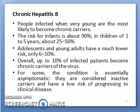Most individuals suffering from acute hepatitis B clear the virus successfully, but some fail to do so and develop chronic hepatitis B. People infected when very young are most likely to become chronic carriers. The risk for infants is about 90%, in children aged 1 to 5 years about 25 to 50%, and adolescents and young adults have a much lower risk of only 6 to 10%.